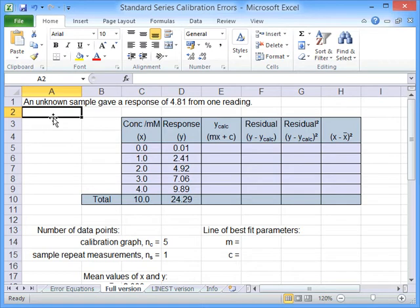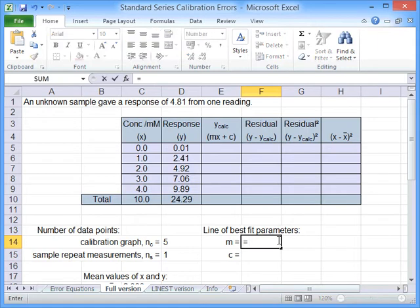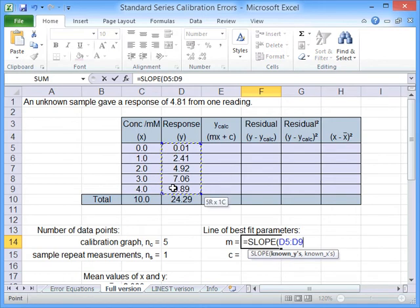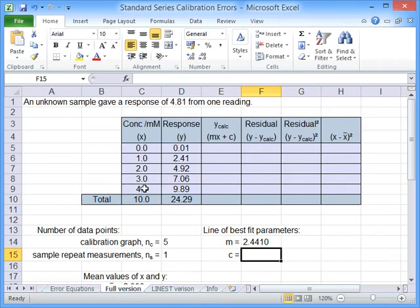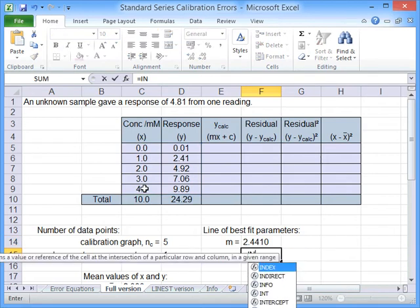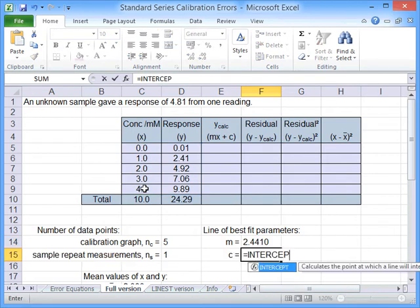And the first thing that we have to do to start working through this is we need the value of M and C, so we need the gradient and the intercept for the line of best fit. So we can get these by using equals slope. Open brackets, we'll highlight that Y data, X data, close the bracket, press enter. Then we can get the intercept as well, using the intercept function.